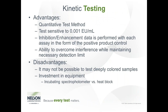There are significant advantages of kinetic testing over the gel clot method. It is a quantitative test with very sensitive assay capability down to 0.001 EUs per ml. Perhaps the biggest advantage is that inhibition enhancement is performed with every assay in the form of a positive product control. Because it is such a sensitive test, if interference is detected, it can usually be overcome with dilution to obtain a valid result. Disadvantages are that deeply colored samples may not be testable with this method, and the investment in a spectrometer and software is significantly more expensive than with the gel clot test.